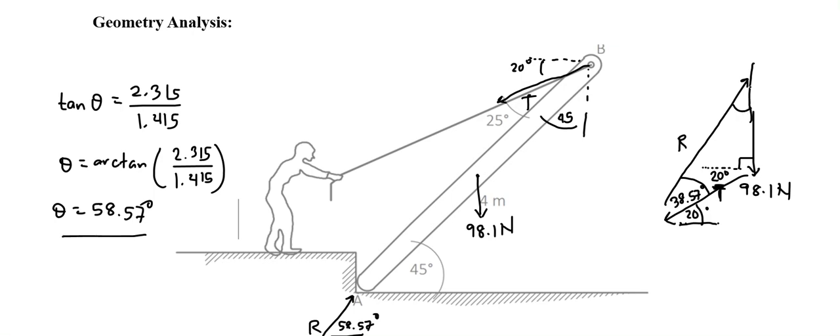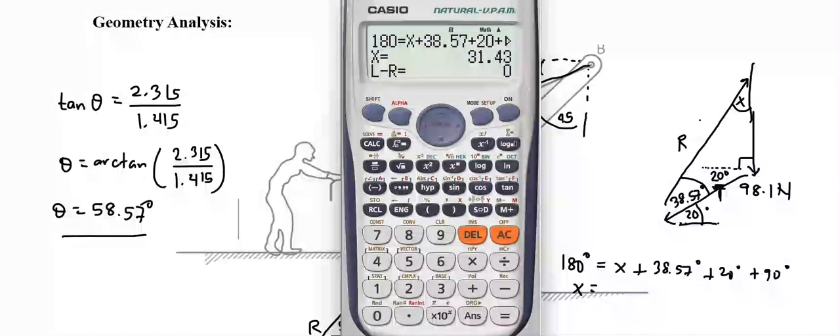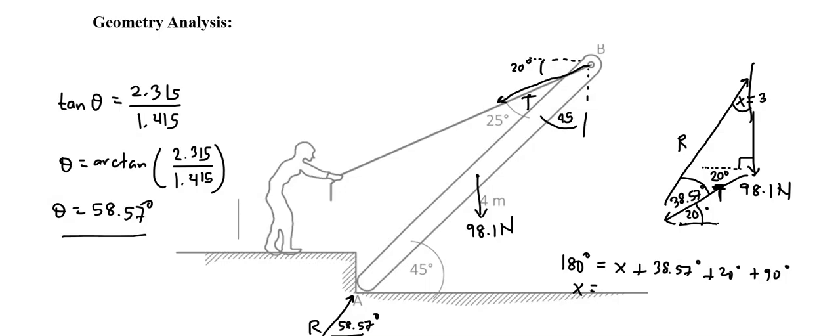And for the remaining angle, knowing that in a triangle the total angle must sum up to 180 degrees, therefore we let this angle equal to x, and 180 degrees must equal x plus 38.57 degrees plus 20 degrees plus 90. Here, x is equal to 31.43 degrees.